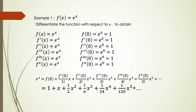Using the Maclaurin theorem to get the expansion of f(x), after substituting f(0), f'(0), f''(0) all equal to 1 into the equation, we get the answer equal to 1 plus x plus 1/2 x² plus 1/6 x³ and so on.